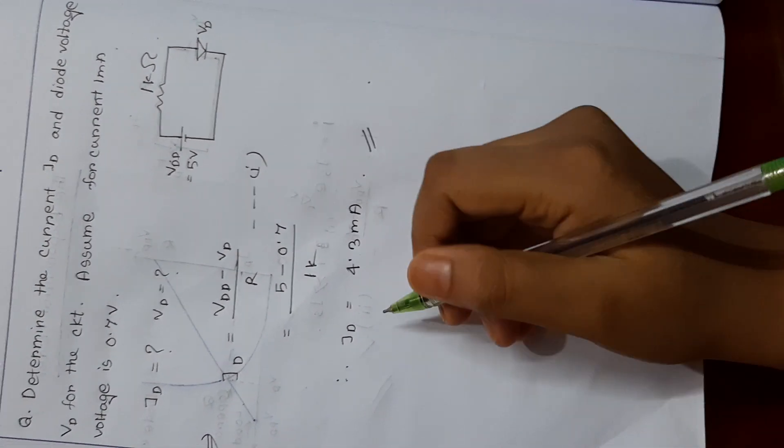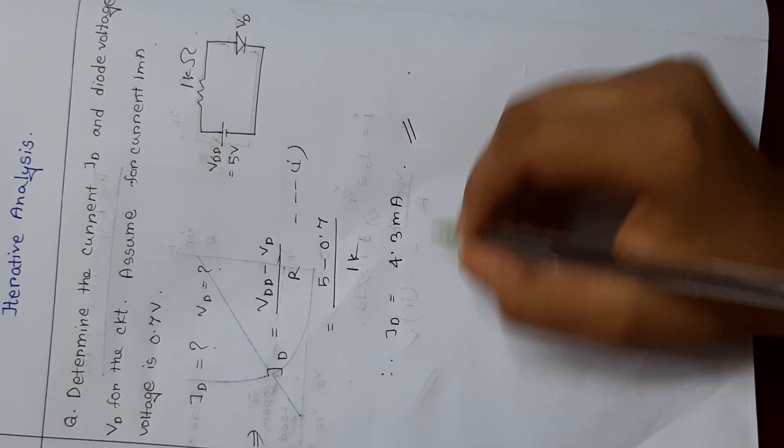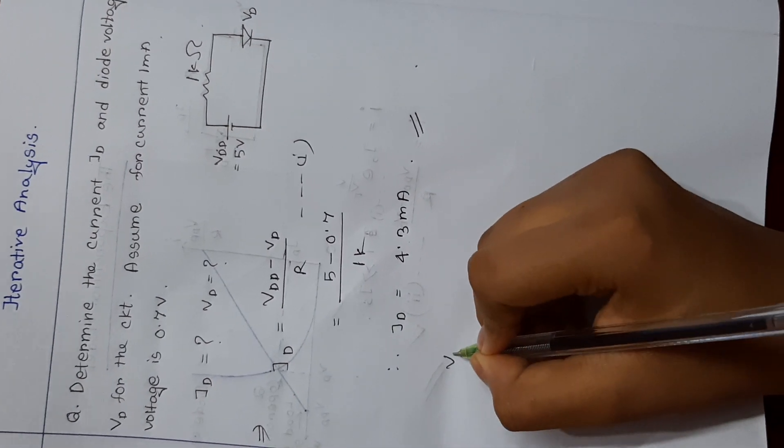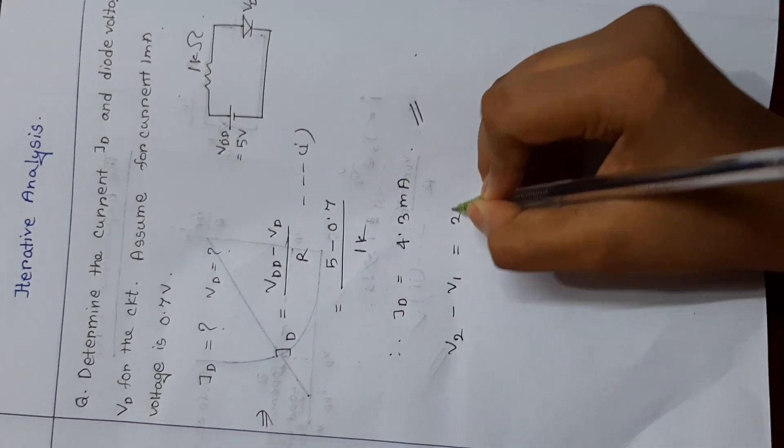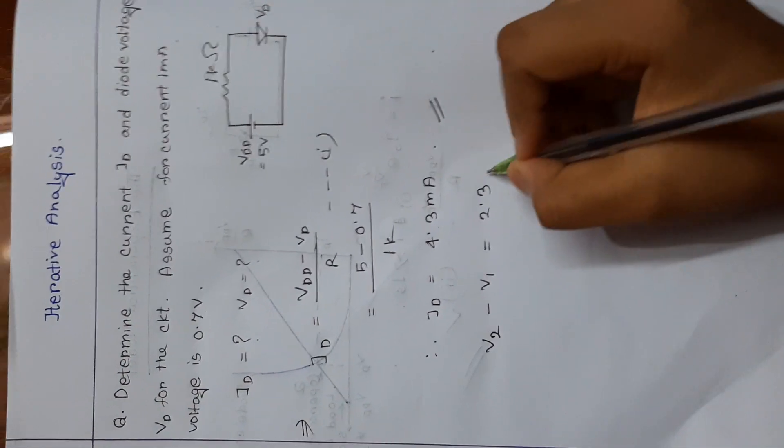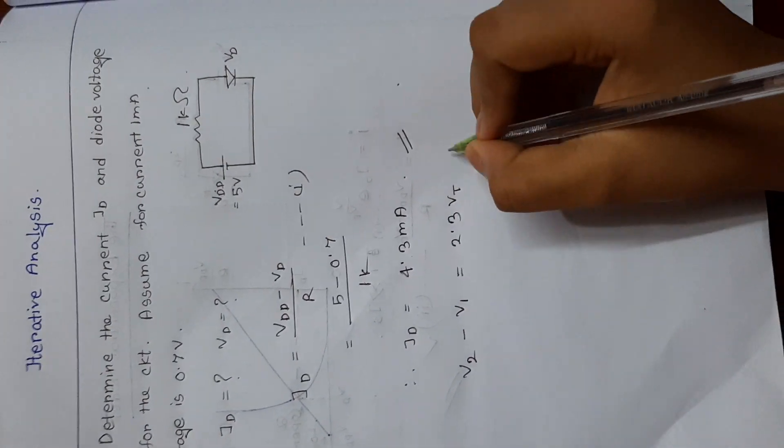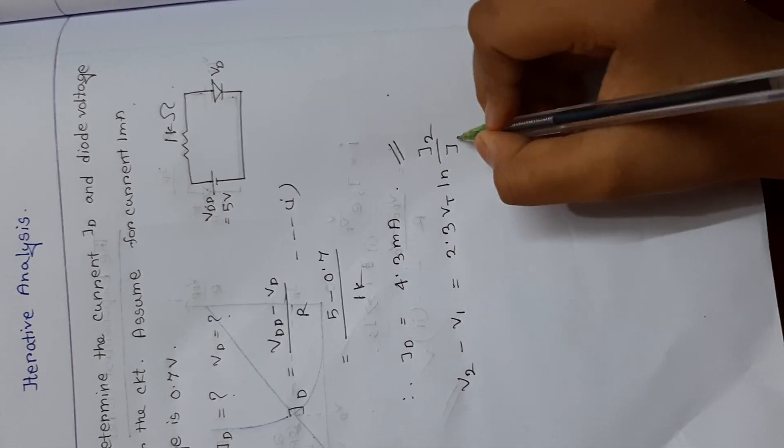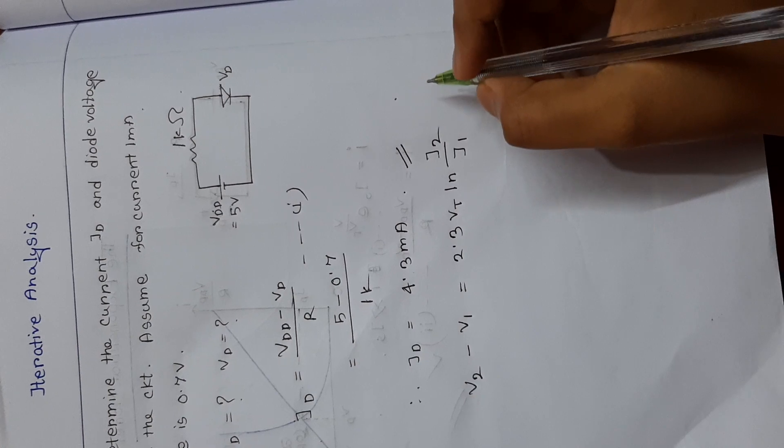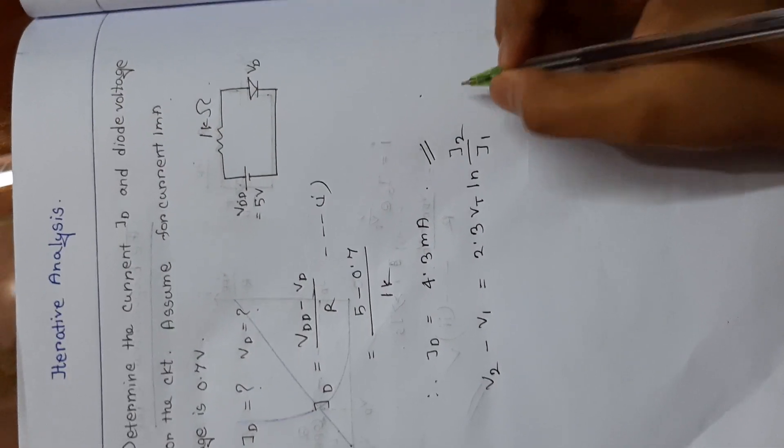That is, we will have to consider the equation like this: V2 minus V1 is equal to 2.3 Vt into ln I2 by I1. I derived this equation in the last video.